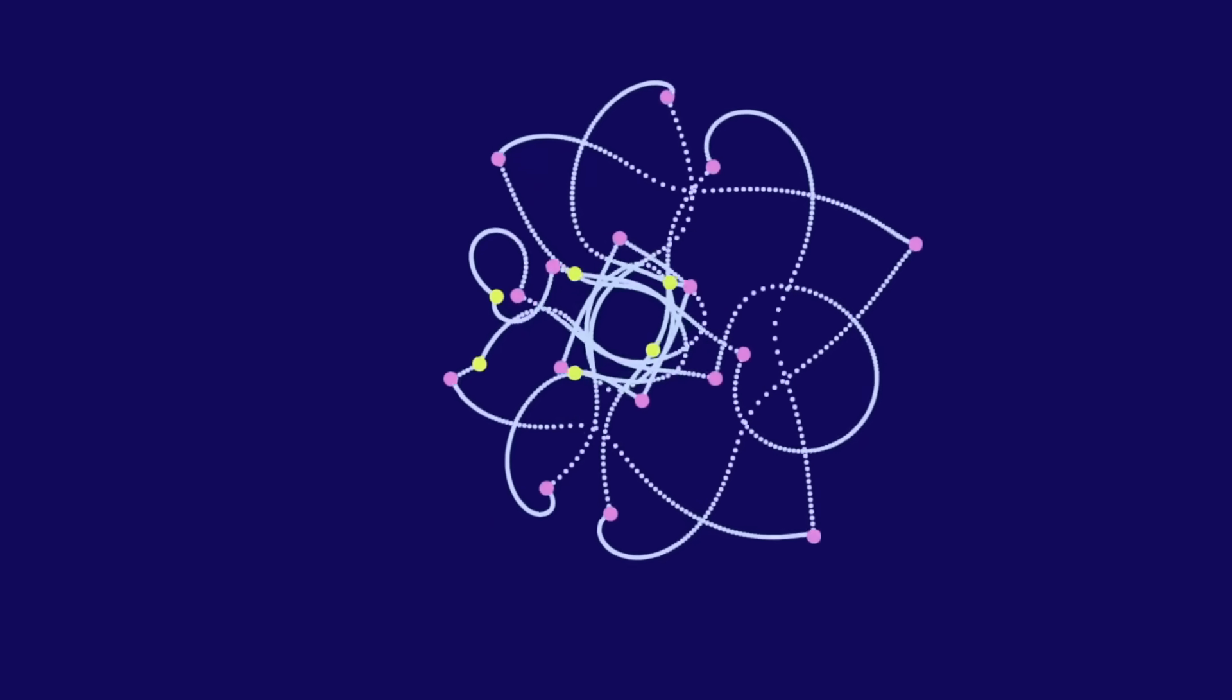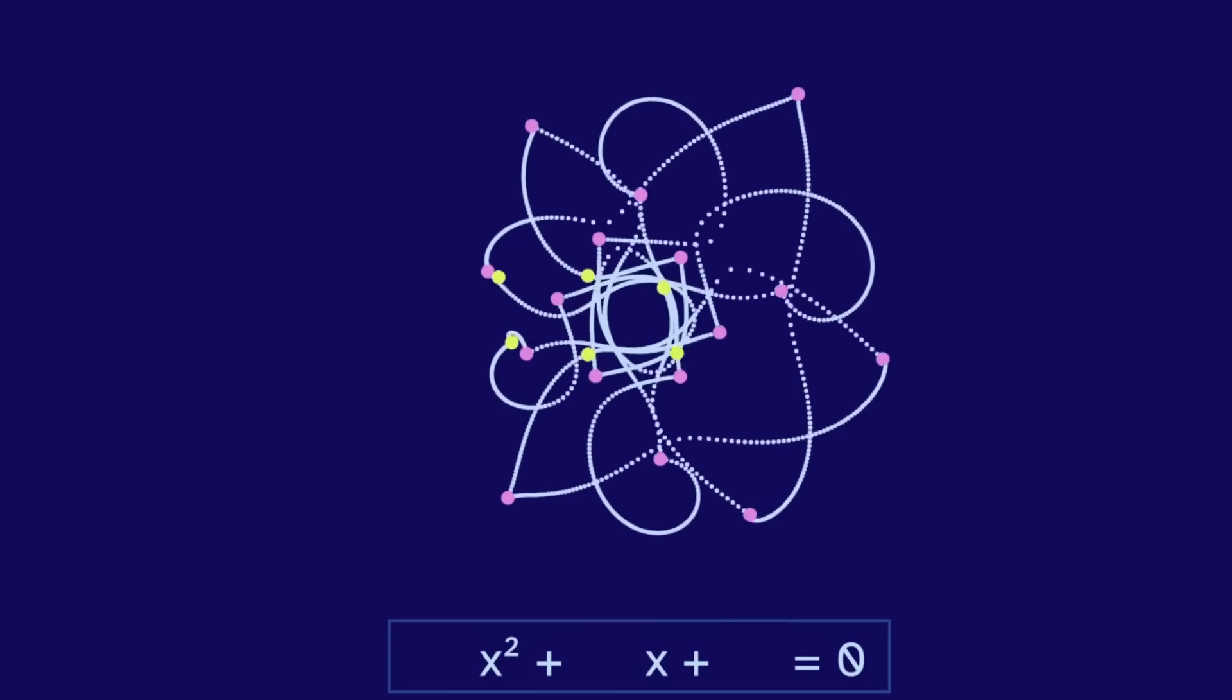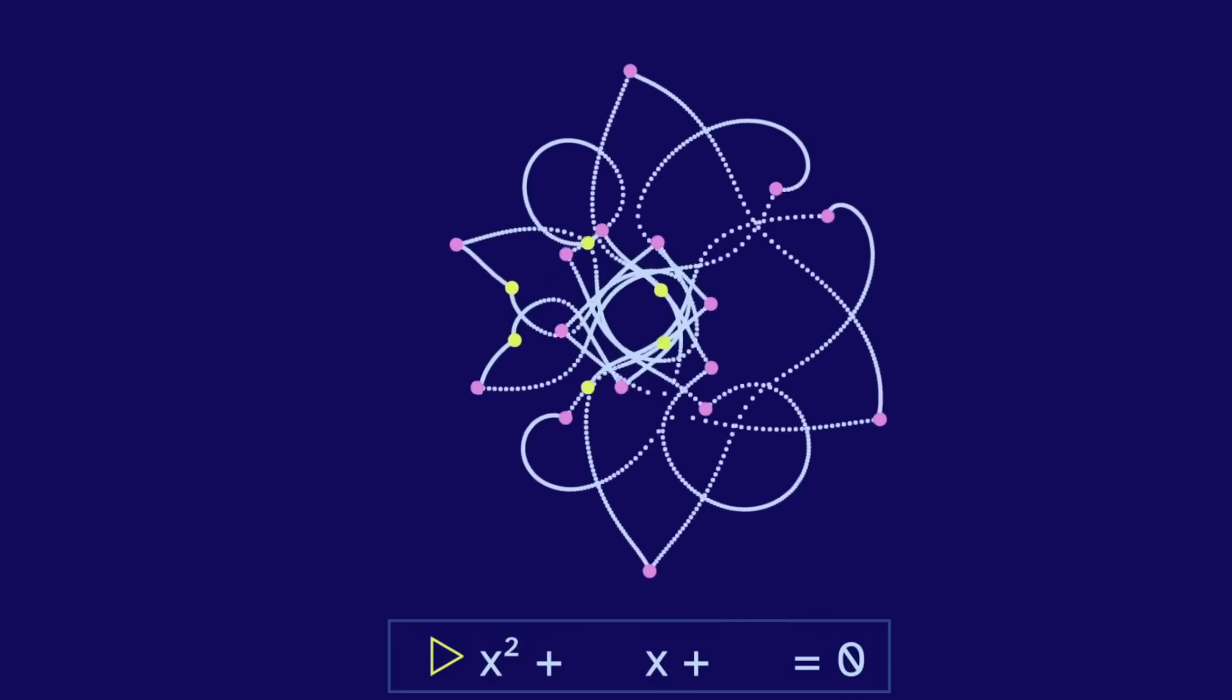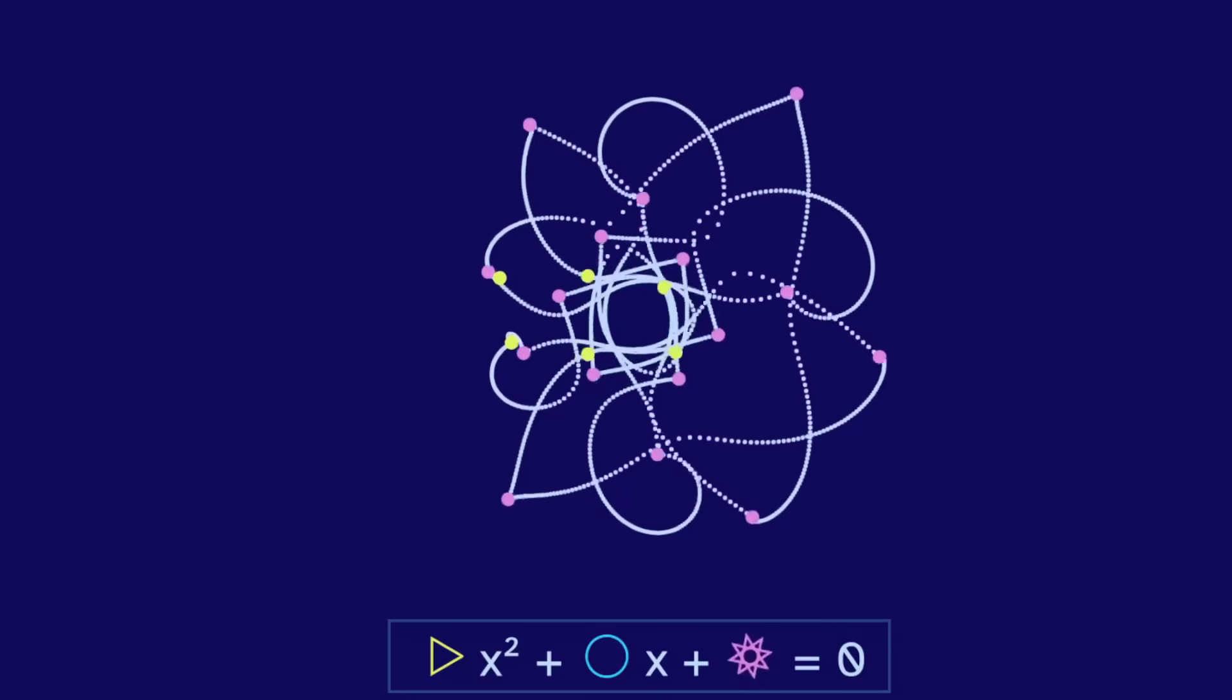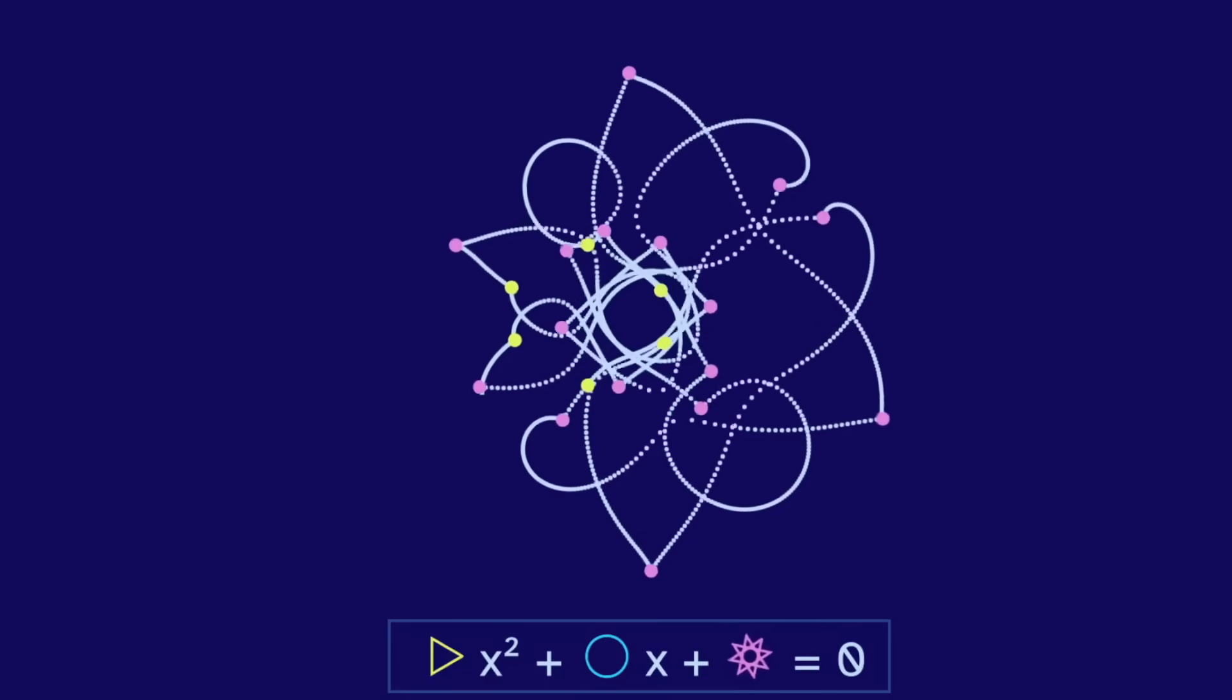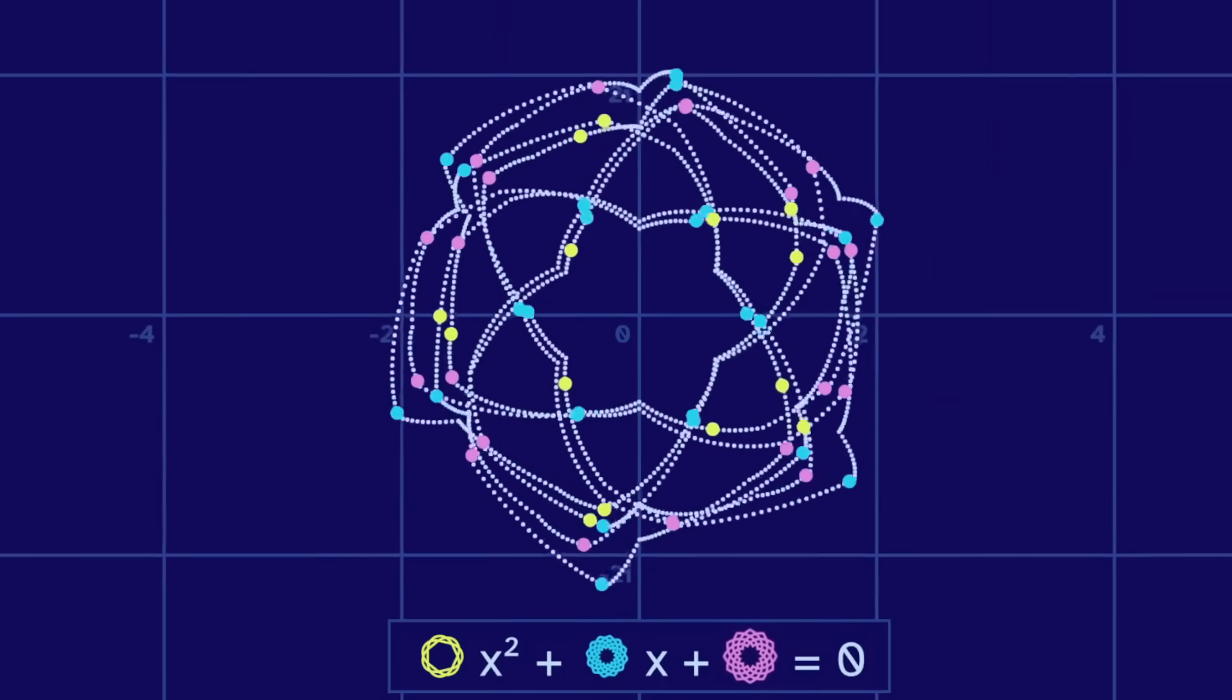This weird shape is the solution of a cursed quadratic equation, where A is a triangle, B is a circle, and C is a spinning star. We can use different shapes to get different solutions.